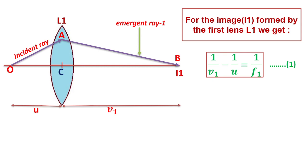For the image I1 formed by the first lens L1, we get: 1/V1 minus 1/U equals 1/F1, where F1 is the focal length of lens L1. Suppose this is equation 1.